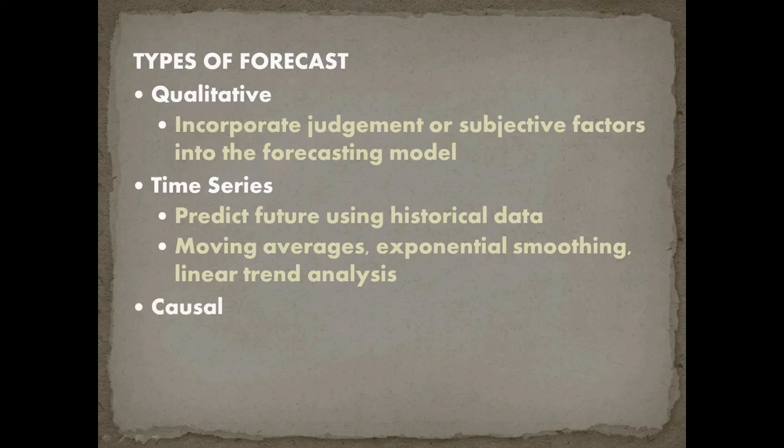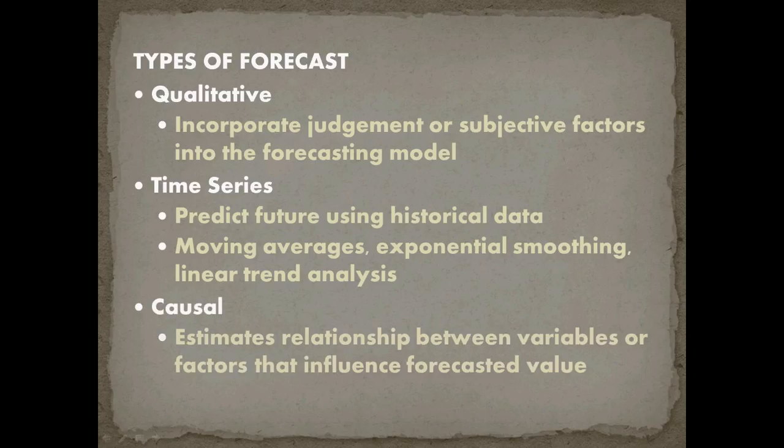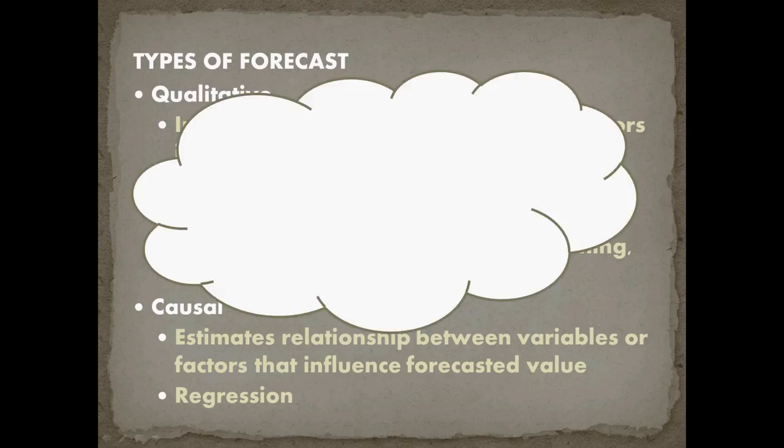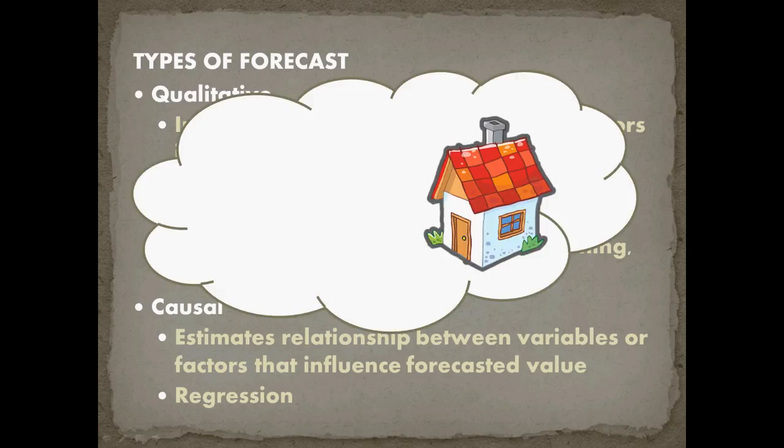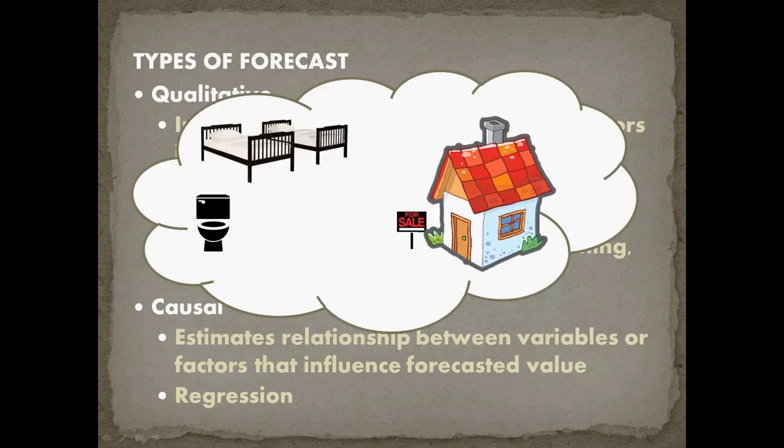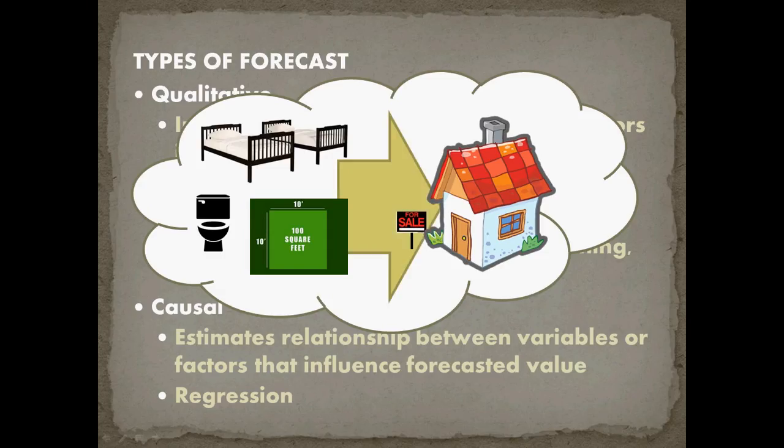After time series we're going to look at causal models and for causal models we estimate relationships between variables or factors that influence the forecasted value. So this is regression analysis and the best way to think of this is let's say I've got a house and my house is for sale and I want to know how much it's going to sell for. I can probably get a very good estimate of how much it's going to sell for by looking at the number of beds, the number of bathrooms, and maybe the square footage of that house because all of these causal factors will relate to that home selling price and I can get a good estimate there.